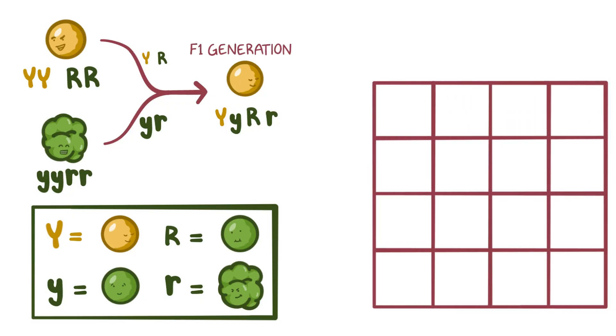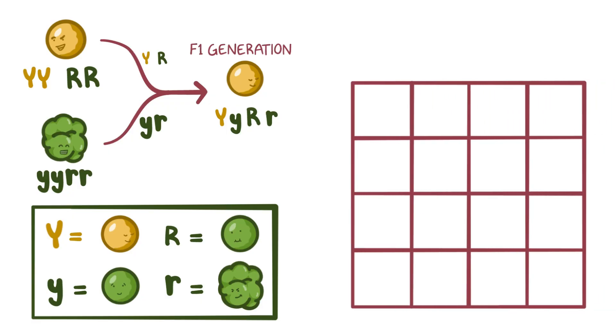Let's put this in a Punnett square. For these two traits, there are four different combinations for each parent: capital Y capital R, capital Y little r, capital R little y, and little r little y.